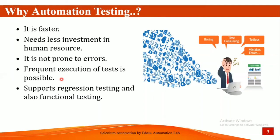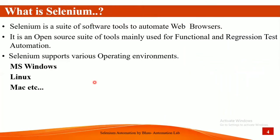Automation testing saves time for running regression and checking any impact on the system. Now, what is Selenium? There are many tools in the market for automation testing, but Selenium is most popular because it is an open source platform. If you want to work with QTP or UFT, you have to purchase a license from HP and pay a lot of money. But Selenium is totally open source, so many companies are currently working with Selenium automation.